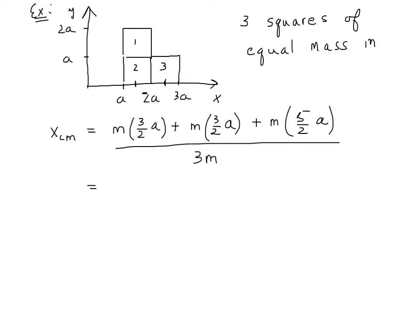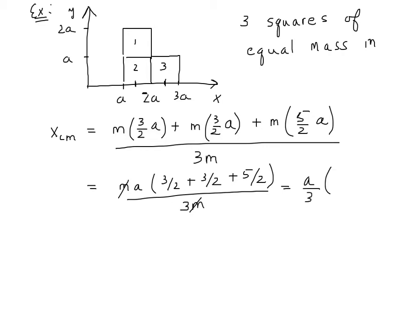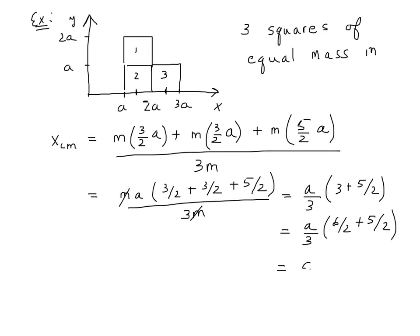So we take out m and a, and we have 3/2 plus 3/2 plus 5/2, divided by 3m. The m's cancel and we have a divided by 3 times (3/2 plus 3/2 plus 5/2). Now 3/2 plus 3/2 is 3, plus 5/2 gives us 6/2 plus 5/2, which is 11/2. So we get 11/6 a.